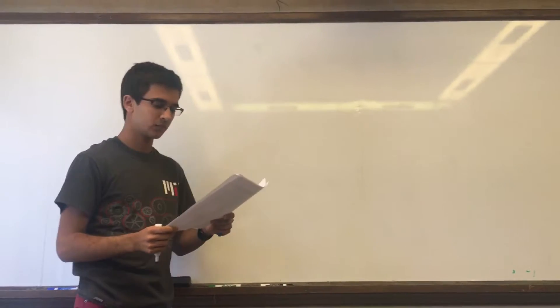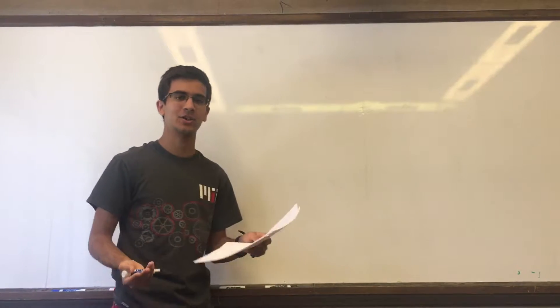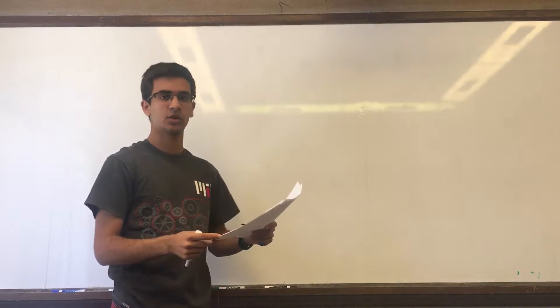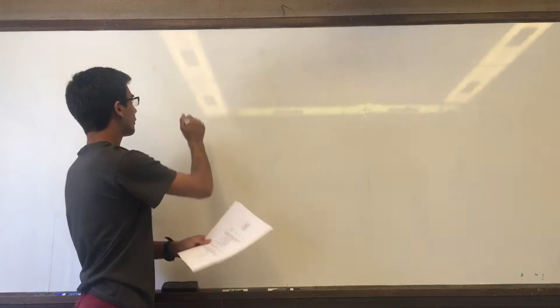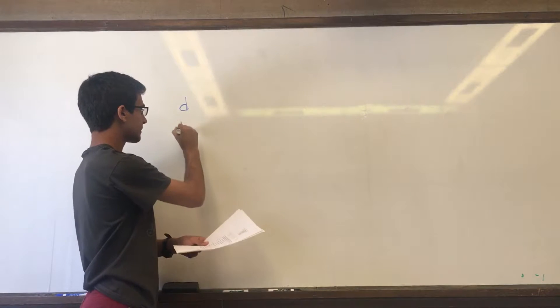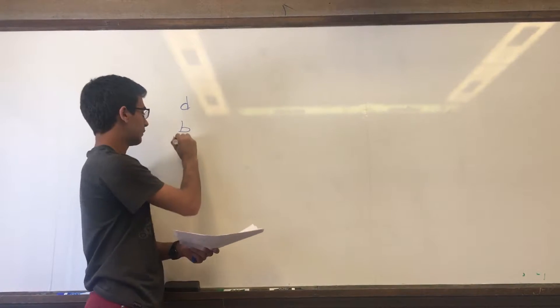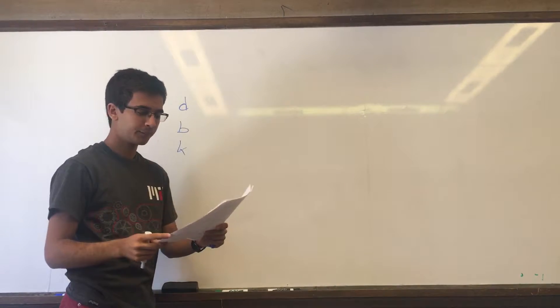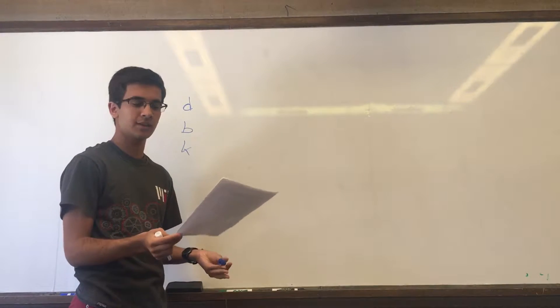At the store we can buy dogs, bears, and kangaroos, so we're going to set three variables. The first one will be d, the price of one dog, the second is b, the price of a bear, and k will be the price of a kangaroo. Now we know that three dogs and two bears together cost as much as four kangaroos.